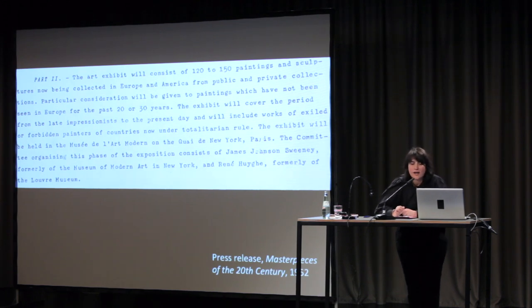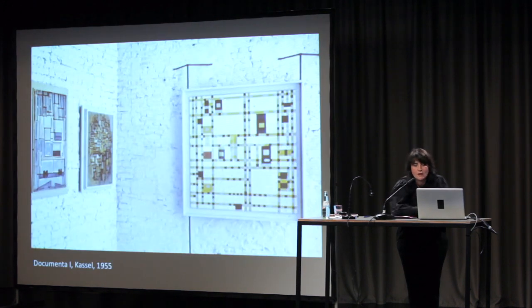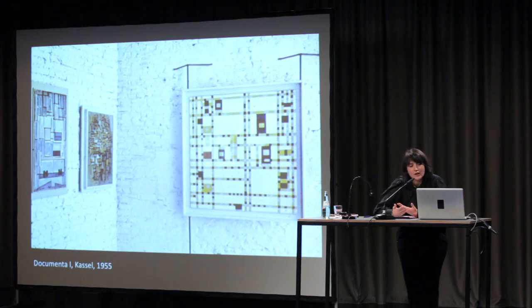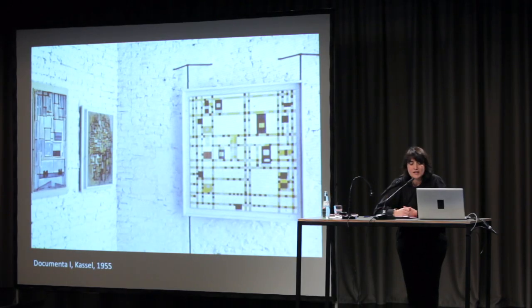The art exhibit consisted of 120 to 150 paintings and sculptures collected in Europe and America from public and private collections. Particular consideration was given to paintings not seen in Europe for the past 20 or 30 years. Although the Masterpieces of 20 Centuries is little known, we consider this one of the secret paths of the CCF — perhaps due to the disclosure in 1967, when it was published that the CCF was receiving CIA finances, making all its legacy a kind of taboo.